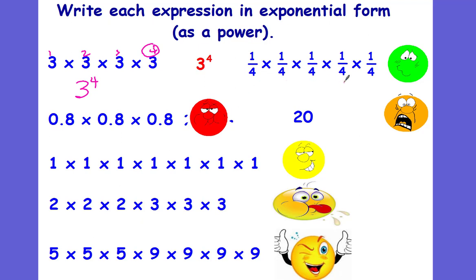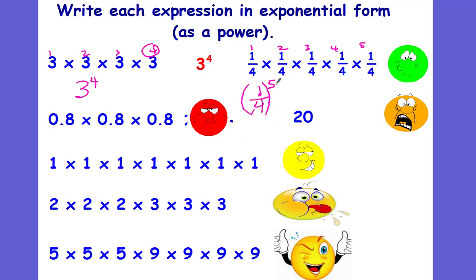We can also write fractions with exponents. What's being repeated? The one-fourth. How many times is it being repeated? 1, 2, 3, 4, 5 times — so the exponent would be 5. Now, this is a little different because if we just put the 1 up top, it looks like 1 to the 5th power. But we want the whole fraction, since the whole fraction is what's being repeated. Special case: we have to put it inside parentheses, and then the exponent goes on the outside. So this would be (1/4) to the 5th power. For 8 tenths repeated 3 times: the base is 8 tenths, the exponent is 3, so this would be (8/10) to the 3rd power.